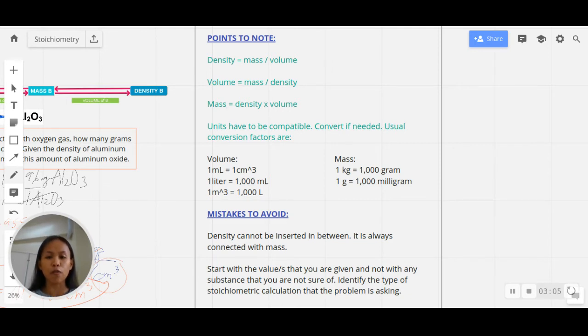Units have to be compatible—convert if needed. Usual conversion factors are the following: for volume, 1 mL is equivalent to 1 cm³, 1 liter is 1000 mL, 1 m³ is 1000 liters. For mass, 1 kg is 1000 grams, and 1 gram is 1000 mg.